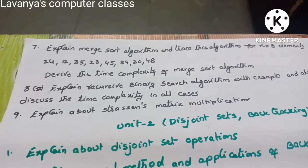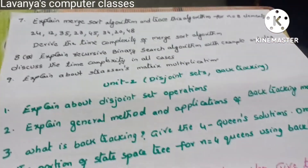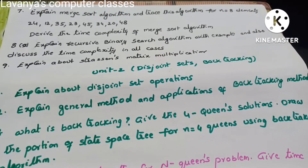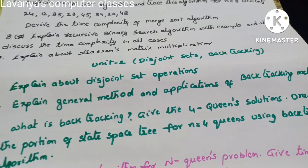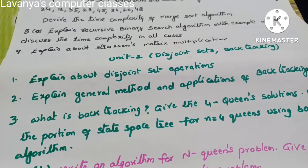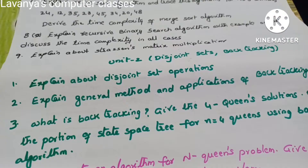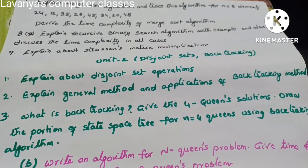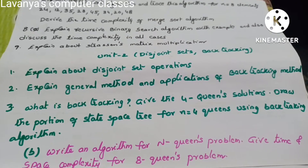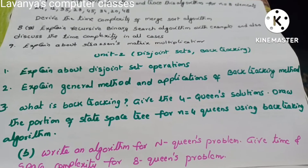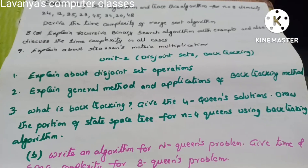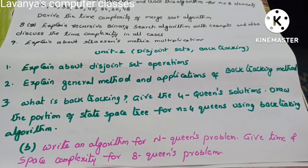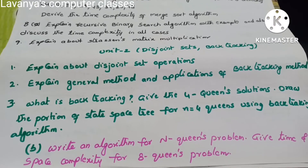Unit 1 is Introduction and Divide and Conquer methods. Unit 2 is a simple unit covering only disjoint sets and backtracking method. Question 1: Explain disjoint set operations. Question 2: Explain the general method and applications of backtracking. Question 3: What is backtracking? Give the four queens solution and also draw the portion of the state space tree for n=4 queens using backtracking algorithm.